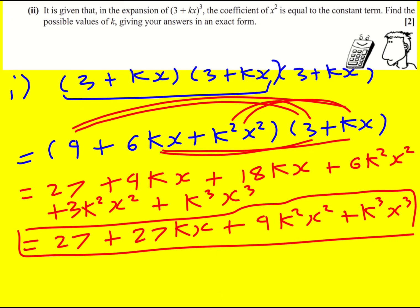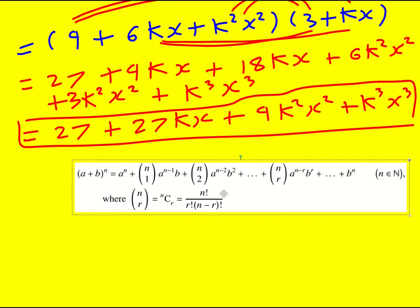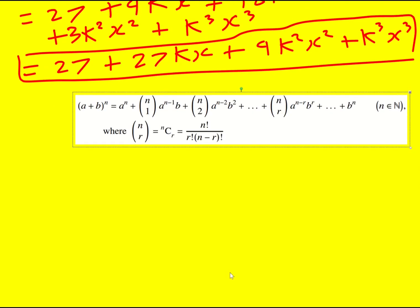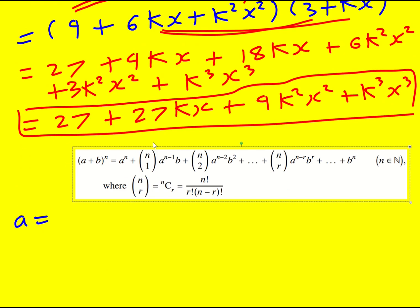All right, let's try it now the formula way. Obviously this formula way really comes into its own when you're raising to a large power. It just feels a bit clunky doing it when n is 3. But remember, I've got 3 plus kx cubed.